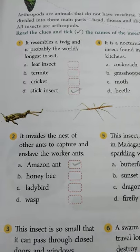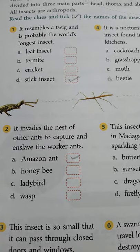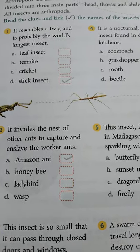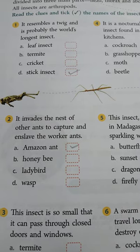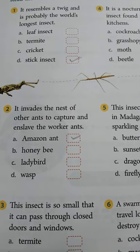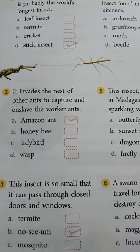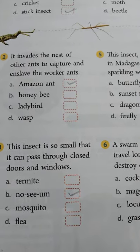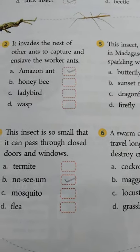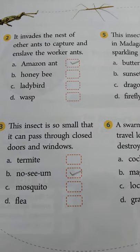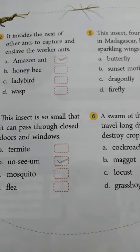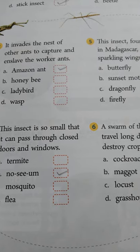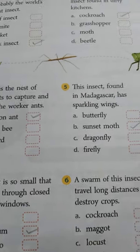The second one: it invades a nest of other ants to capture and enslave the worker ants. The answer is amazon ant. The third one: the insect is so small that it can pass through closed doors and windows. The answer is noseeum — N-O-S-E-E-U-M.